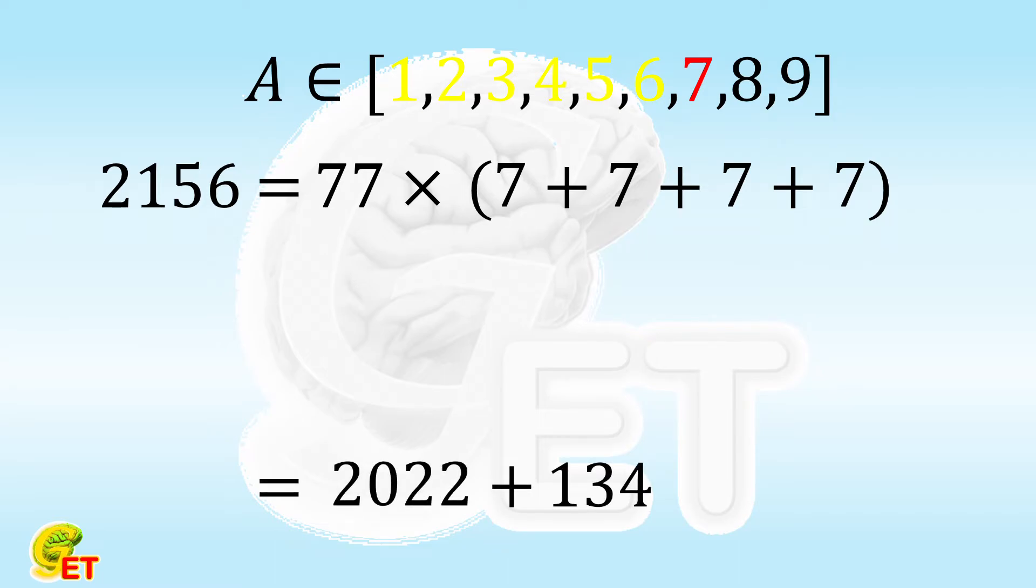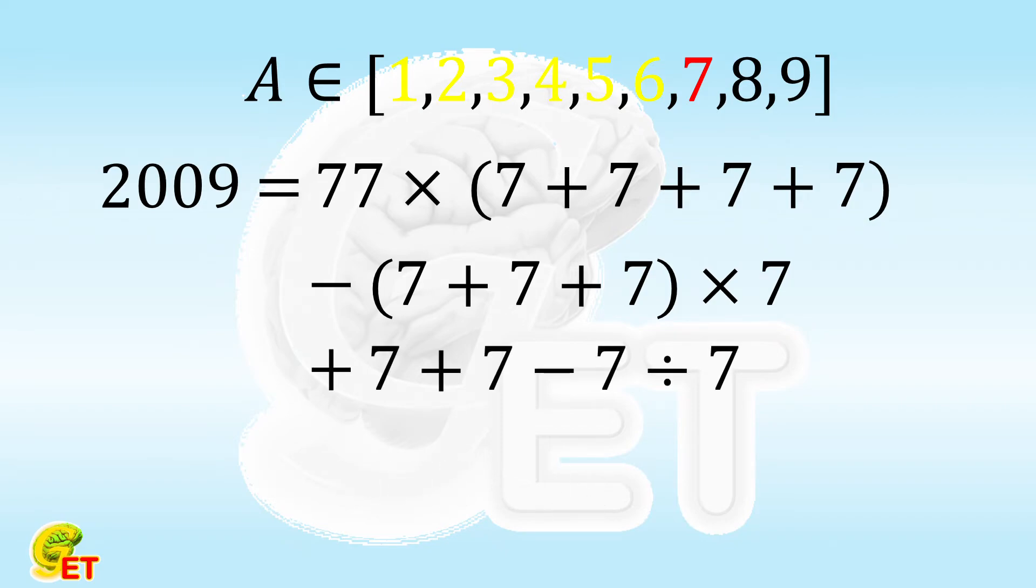2156 equals 2022 plus 134, which is close to 140. 140 is 20 times 7. We don't have 20, but 3 times 7 equals 21. So we make it by subtracting the summation of 3 sevens multiplied by 7. It is equal to 2009, which is smaller than 2022 by 13. Well, 13 is twice 7 minus 7 divided by 7. So we fulfill this task with 14 times of 7.